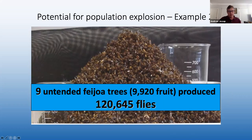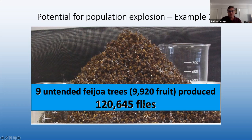Here's a pile of 120,000 fruit flies collected from just nine fairly small, untended Feijoa trees. All the fruit from the trees and from the ground underneath were collected and all the flies reared out and counted. In one season, from around March-April, 120,000 flies came out of those fruits. If you don't look after your fruit and you've got a population of fruit fly around, that's the sort of population explosion you can get. Those 120,000 flies would have gone into other fruiting trees or into winter refuge mode, ready to re-emerge in spring.